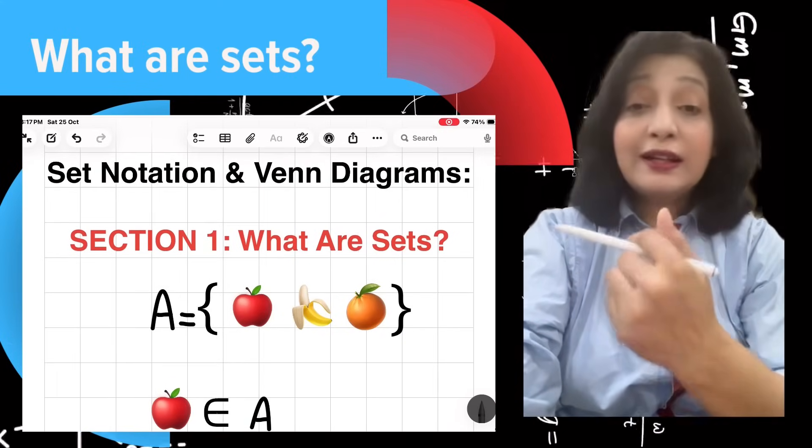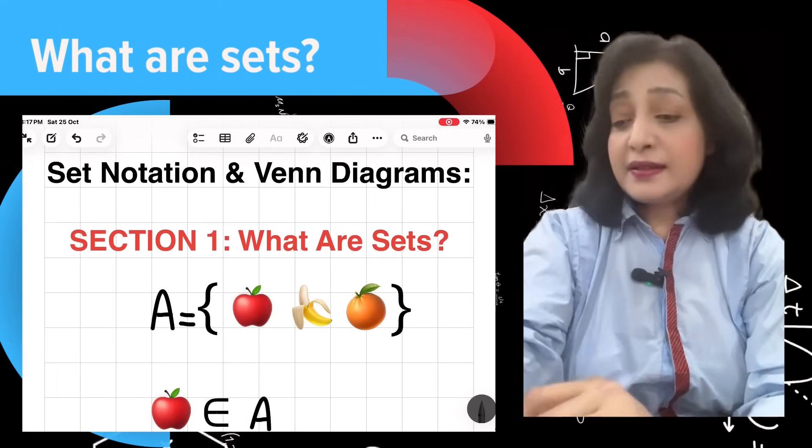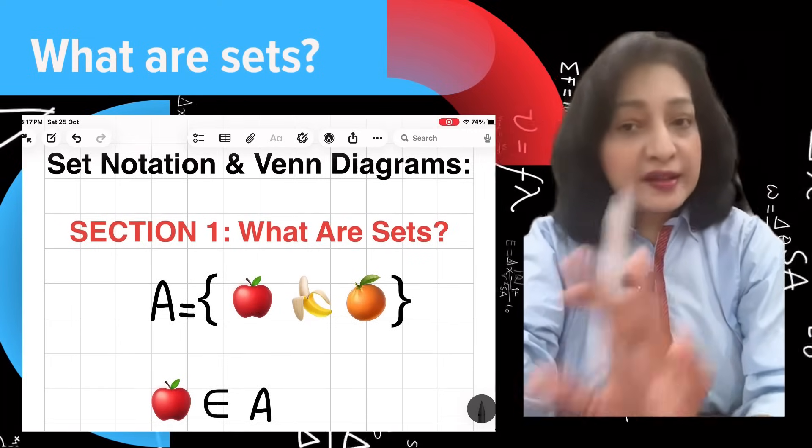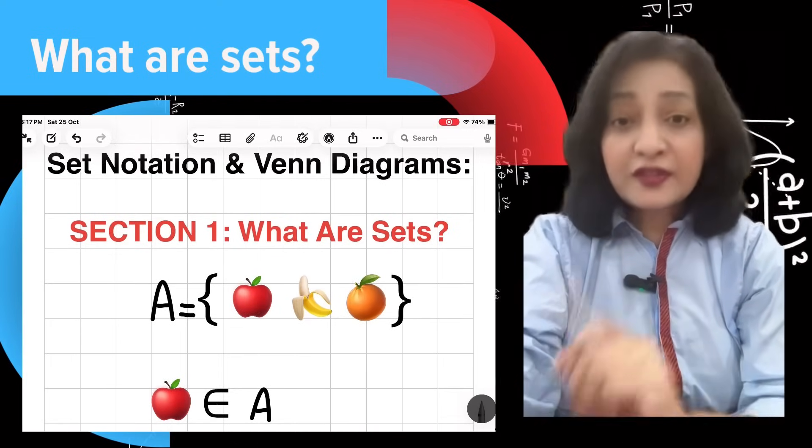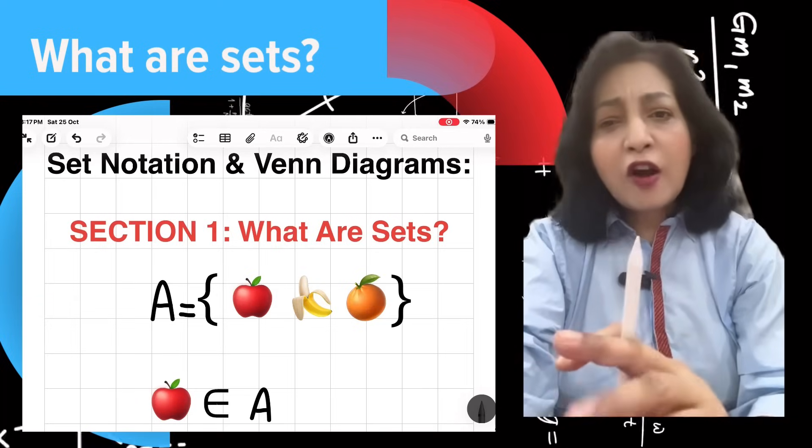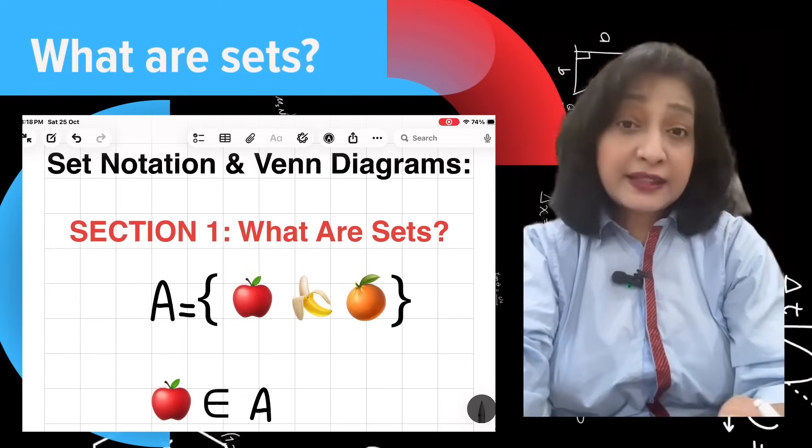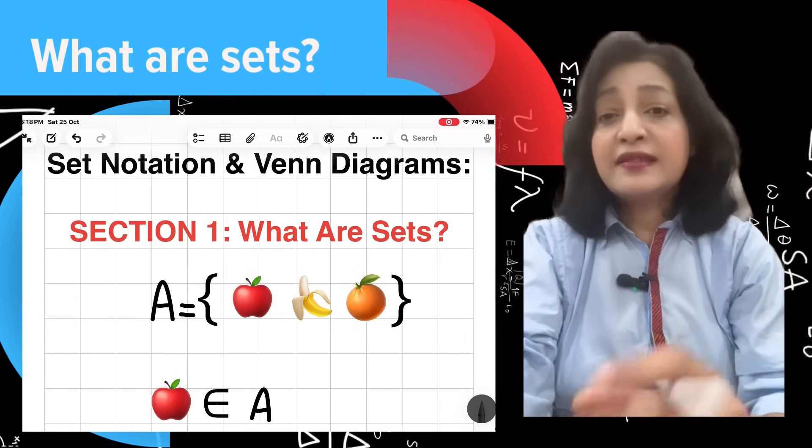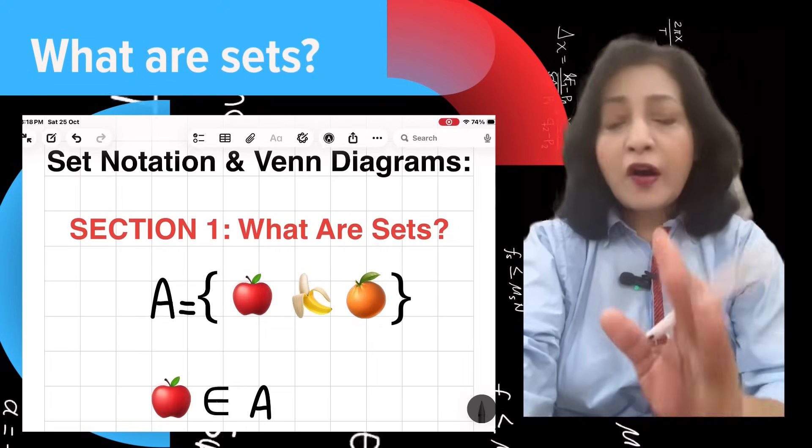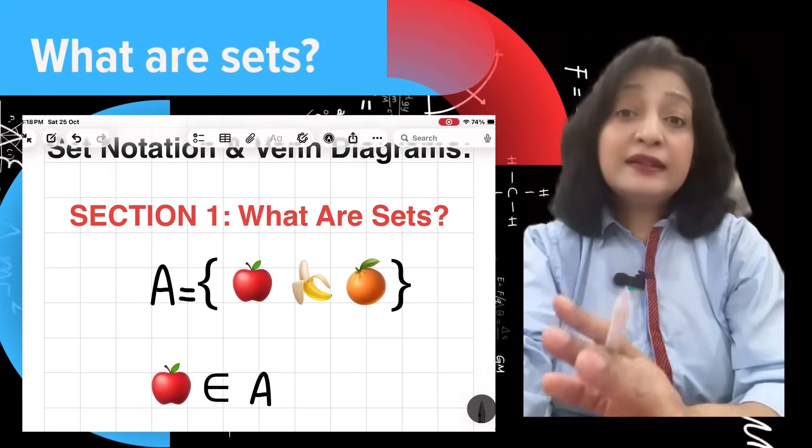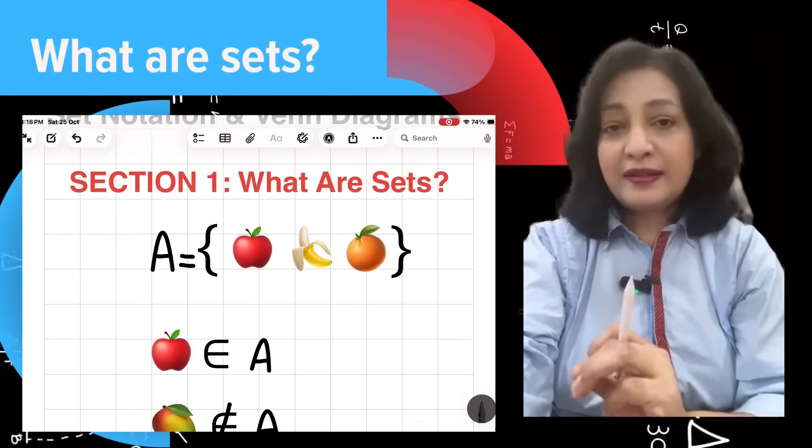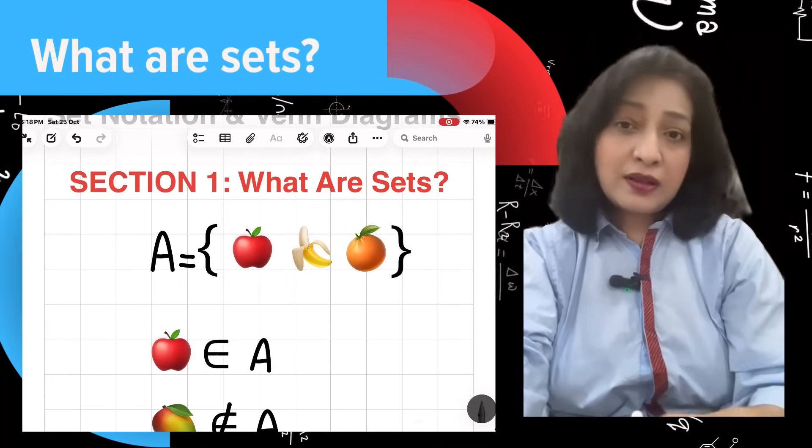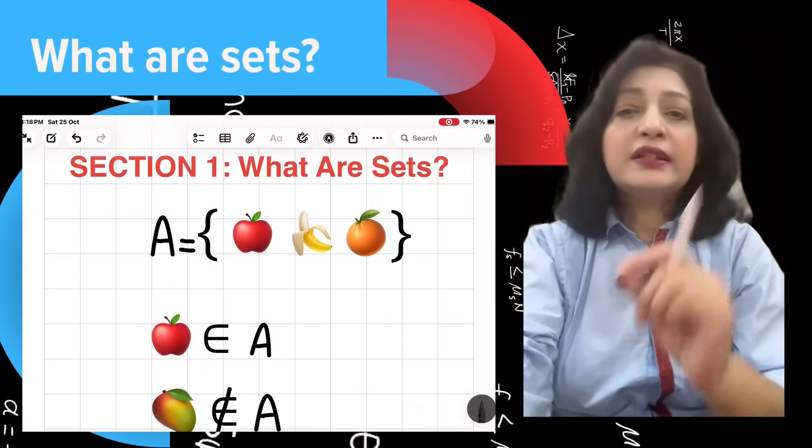Now look at the screen. First, let's talk about sets. A set is just a collection of items called elements. Think of it like a bag of your favorite things. For example, imagine a set of your favorite fruits. I have a set called A that contains three elements: apple, banana, and orange.